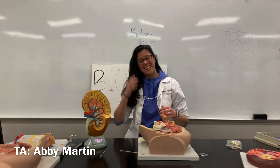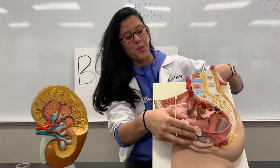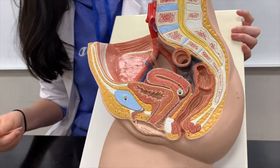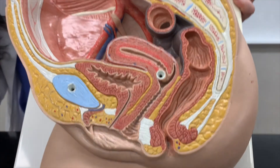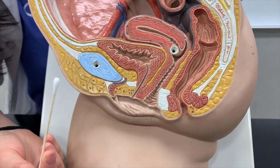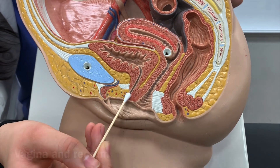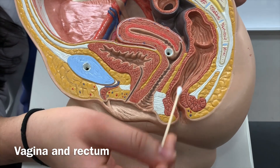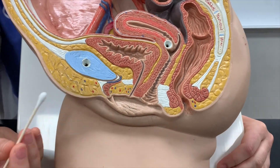Here we have the female pelvis. You want to identify if it's a male or female first so you know what you're looking at. You can clearly see the urethra, the vagina, and the rectum in the back. Just notice the close proximity between all of them.